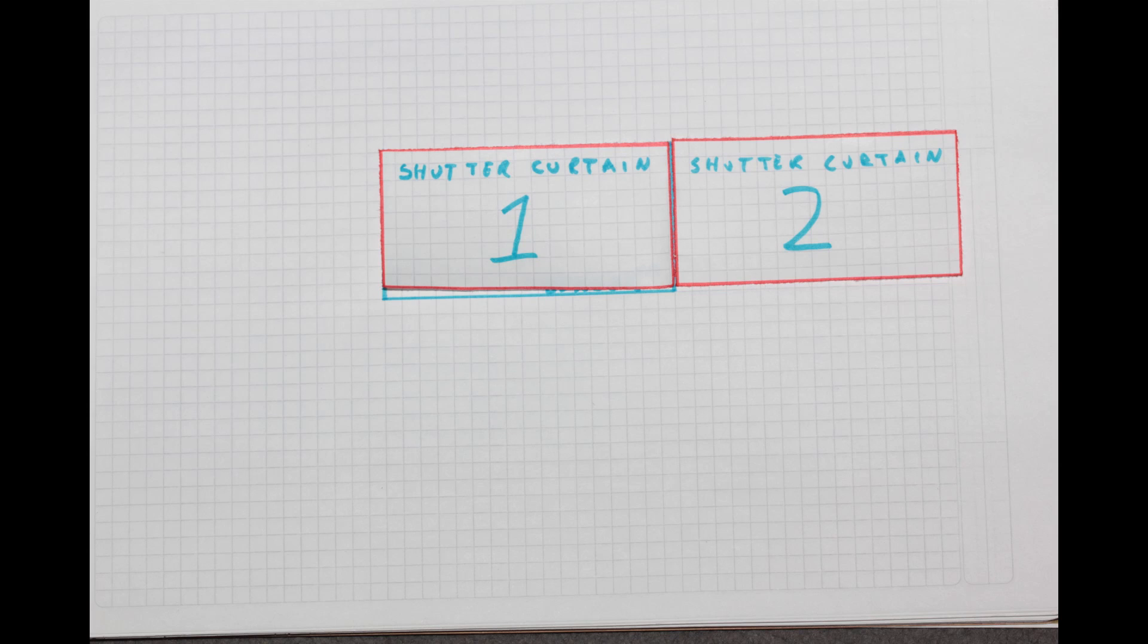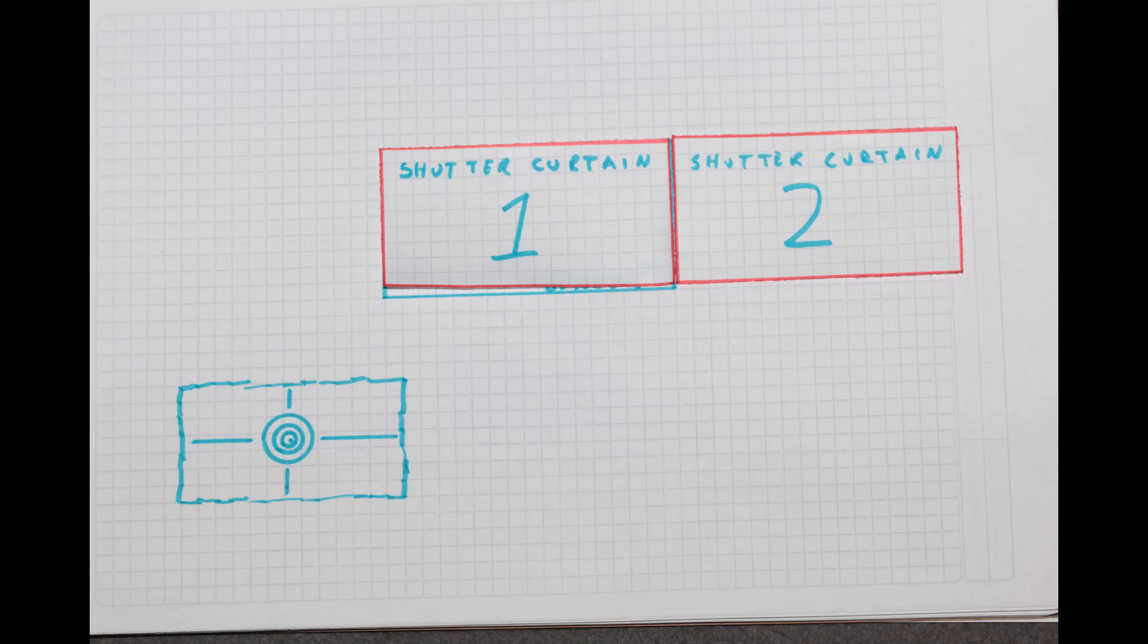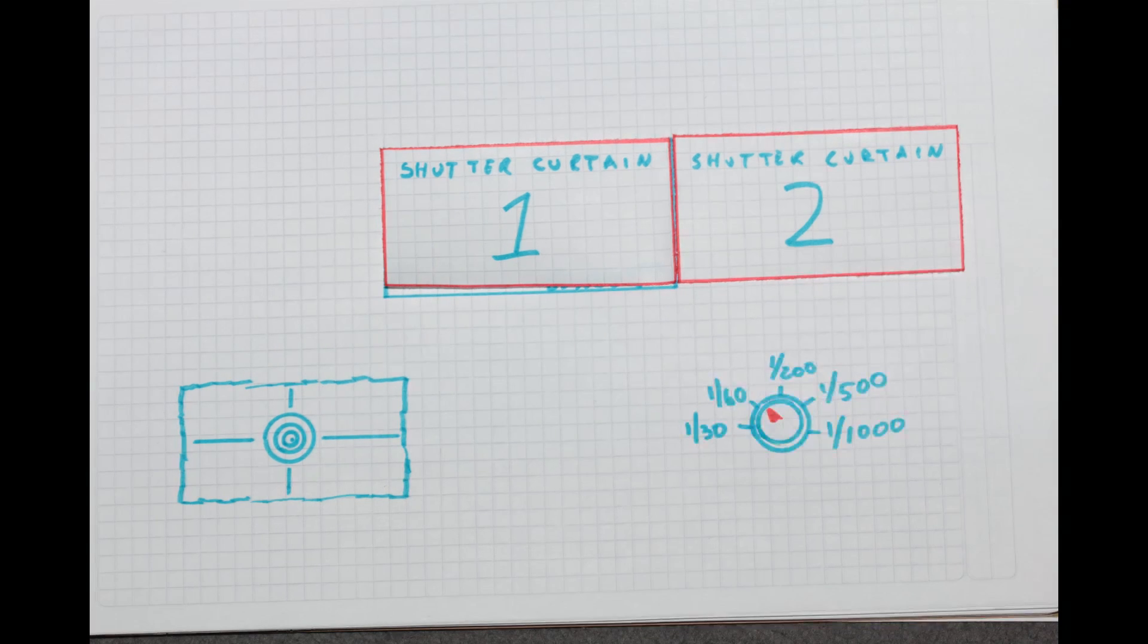But hey, wasn't this meant to be about flashes? Right, let's see what happens if we add in a flash and try again. When we're talking about flash sync, the shutter speed starts becoming important. So let's add that into the mix and try the first exposure at a sixtieth of a second.